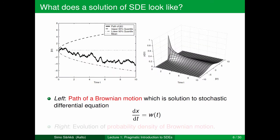What does a solution to a stochastic differential equation look like? This is an example of a simple SDE solution called Brownian motion. Brownian motion can be thought of as a solution to an SDE where the time derivative of x equals white noise. On the left we have a trajectory of a Brownian motion, which is basically a random walk path in one dimension, along with the 95% quantiles drawn in the figure. On the right, we can see the evolution of the probability density of the Brownian motion — it starts very narrow and widens as time passes.